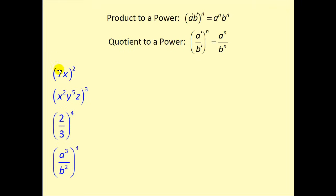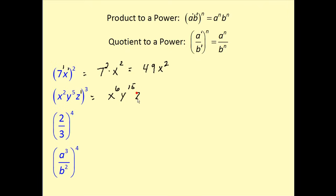We have several examples. First, we have seven x, quantity squared. This is actually seven to the first and x to the first. Applying the product-to-power rule, we get seven squared times x squared, which equals forty-nine x squared. A common mistake is forgetting to square the seven as well as the x. The next problem: there's no exponent on the z, so remember that means it's a one. We get x to the two times three power — x to the sixth; y to the five times three — the fifteenth power; and z to the one times three — the third power.